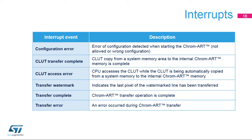The Chrom-ART accelerator has six interrupt sources to signal: configuration errors, CLUT transfer complete, CLUT access error, watermark reached during a transfer, transfer complete, and transfer error.